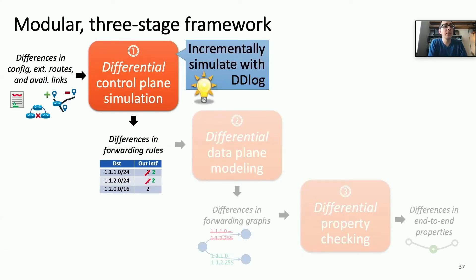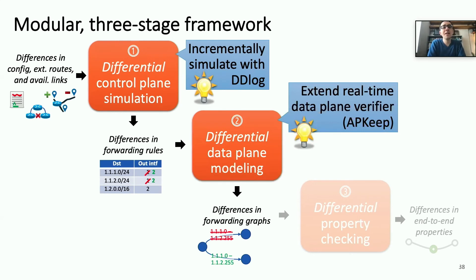So, I've talked about the first stage of our modular three-stage framework in which we incrementally simulate the control plane using DD log. In this second stage, differential data plane modeling, we rely on a real-time data plane verifier, APKEEP, that's designed to process updates and forwarding rules in real-time. We modify it to process batches of forwarding rules in order to more efficiently compute changes in equivalence classes and changes in those equivalence classes forwarding graphs.